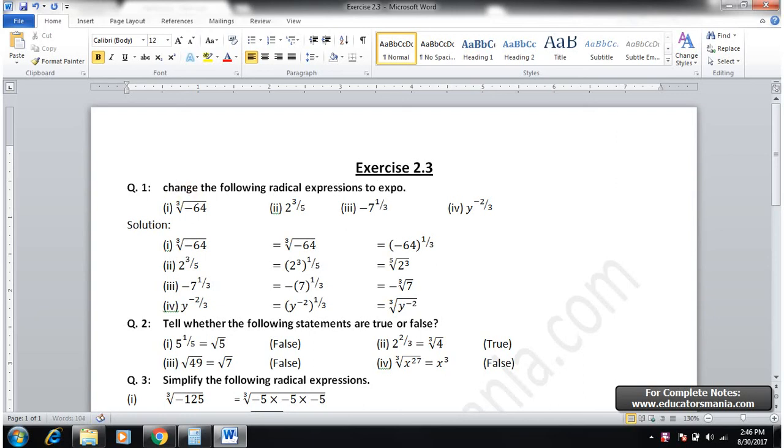Part one is third root of minus 64. Third root of minus 64 equals to minus 64 to the one over three. This is one over three form which can be written in the third root, which means one over three power. In exponential form we write it accordingly.